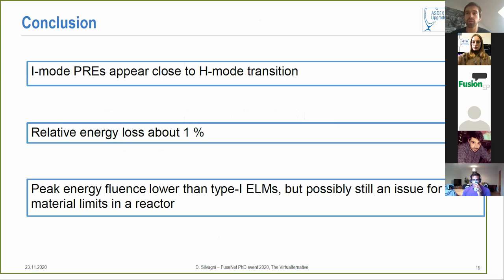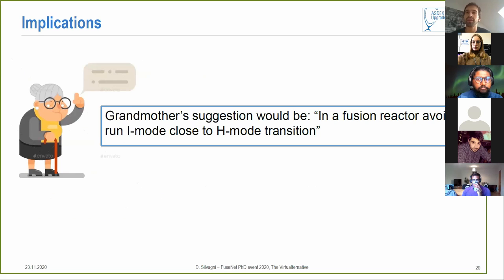So to conclude, I've shown you that I-mode PREs can appear close to the H-mode transition, that they have a relative energy loss of more or less one percent, and that this peak energy fluence on the divertor is lower than type-1 ELMs but still can be possibly an issue for material limits in reactors. And if we want to draw some implications of all this, as a grandmother would suggest - because in Italy in our society grandmothers are the wisest people - she would say well if you want to run a fusion reactor in I-mode just run it not so close to the H-mode transition and this way you will have high confinement and you will not have these events appearing. Thank you for your attention. Thank you very much Davide, indeed a very enlightening talk.